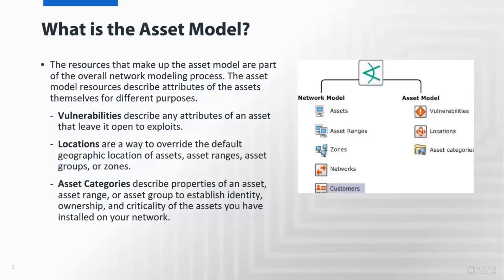What is the asset model? At its core it consists of three resource types: vulnerabilities, location, and asset categories. They ultimately fill out the network model and associate these attributes specifically to the assets or asset categories, network, or asset ranges. They can be applied across and inherited down through the resource trees as assets ultimately belong and map back through the network model.